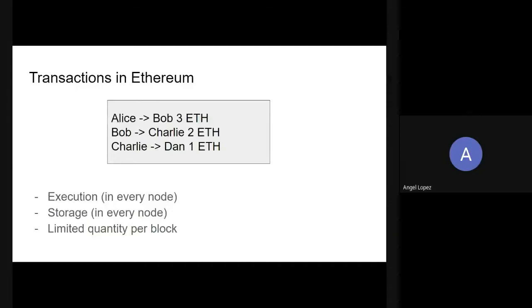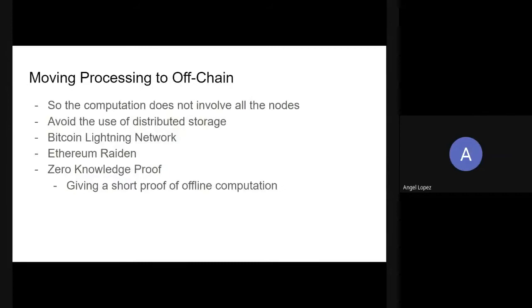You cannot run a lot of transactions because the quantity of transactions is limited per block. There are many limitations that the Ethereum founders were aware of since the beginning, and they started to explore different solutions. One of the things they found was to move the processing off-chain.